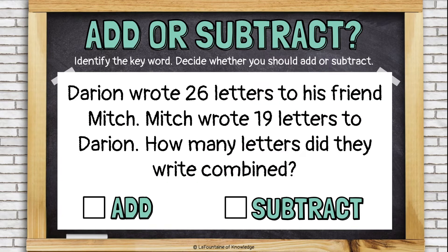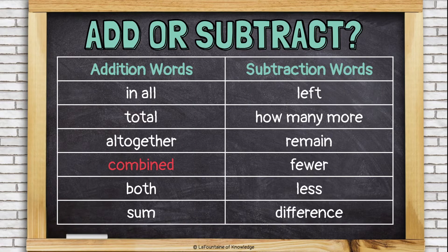Darian wrote 26 letters to his friend Mitch. Mitch wrote 19 letters to Darian. How many letters did they write combined? The word 'combined' means to put things together. When we're putting things together, we are adding. Combined is usually an addition word.